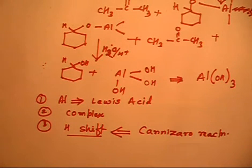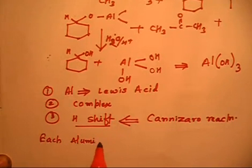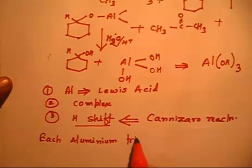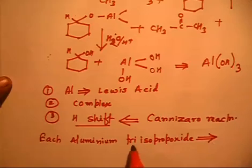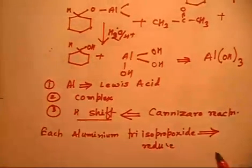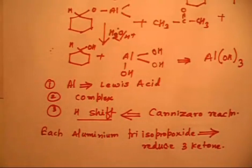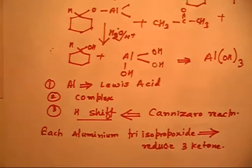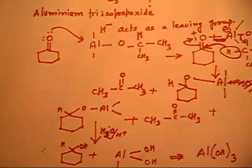Each aluminum tri-isopropoxide molecule has three isopropoxide hydrogens, so it is capable of reducing three ketone molecules. Remember: each aluminum tri-isopropoxide will reduce three ketone molecules. The reaction is called the Meerwein-Ponndorf-Verley reaction, and the key feature is a hydride shift similar to the Cannizzaro reaction.